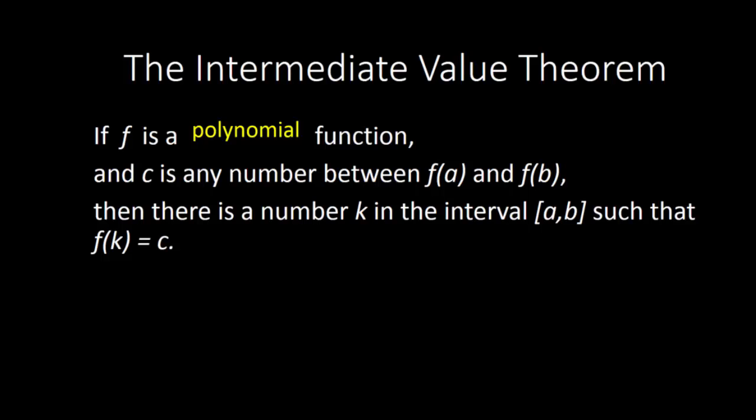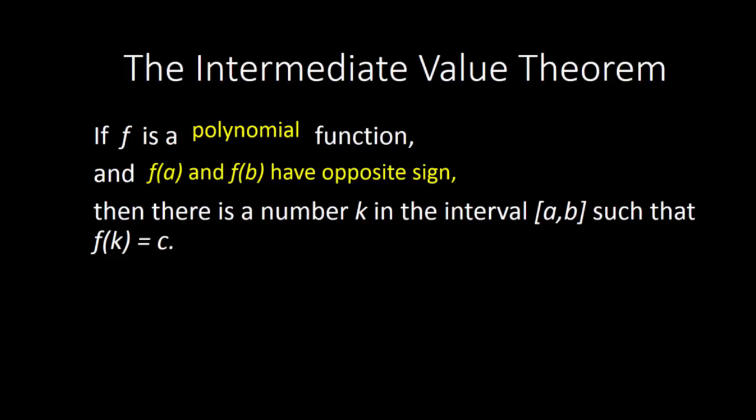Instead of just picking two random y values, let's say that f of a and f of b have opposite sign — one of these is positive and one is negative. If we have one positive y value and one negative y value, what number is always between those? The answer is zero. If we have a positive number and a negative number, we always know zero will be in between.